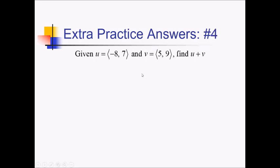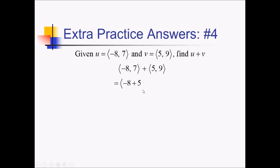For this problem, we've got two vectors in component form and we want to figure out what u plus v is. So we're just going to plug these vectors in for u and v — negative 8 comma 7 plus 5 comma 9. Adding these together, we're basically just adding the x values and adding the y values, so we get negative 8 plus 5 comma 7 plus 9, which simplifies to negative 3 comma 16.